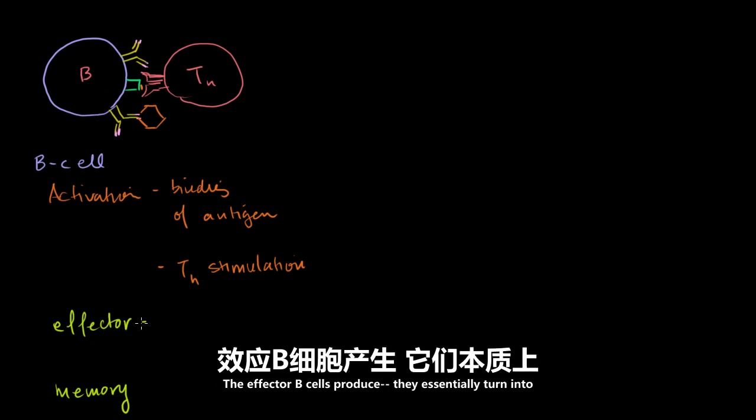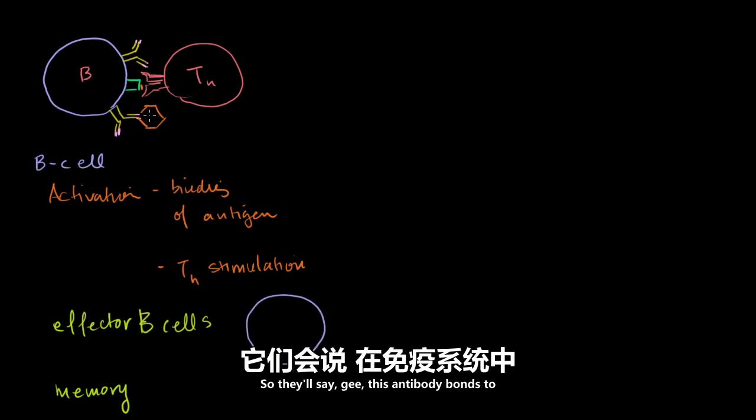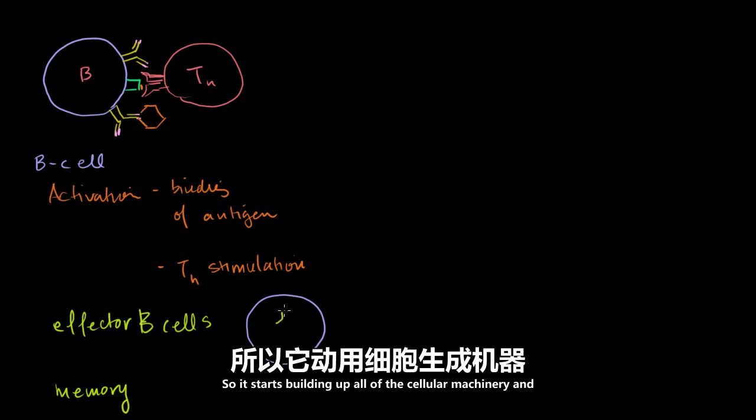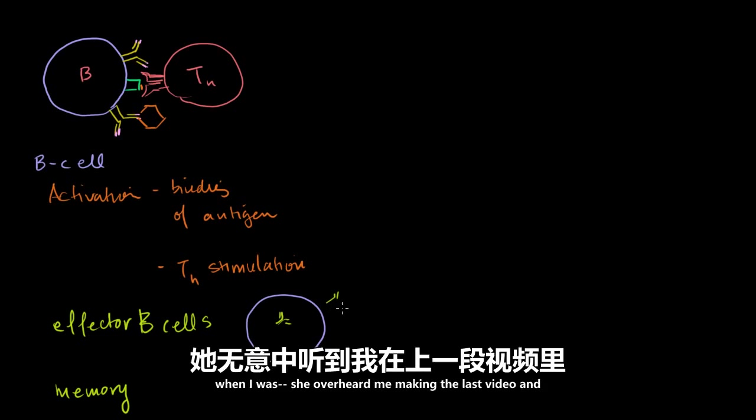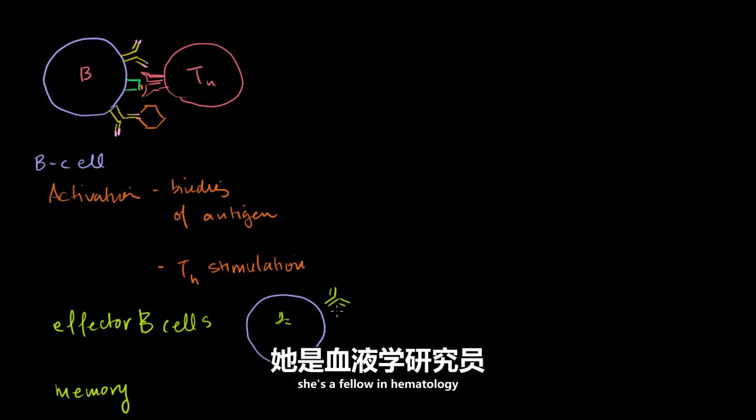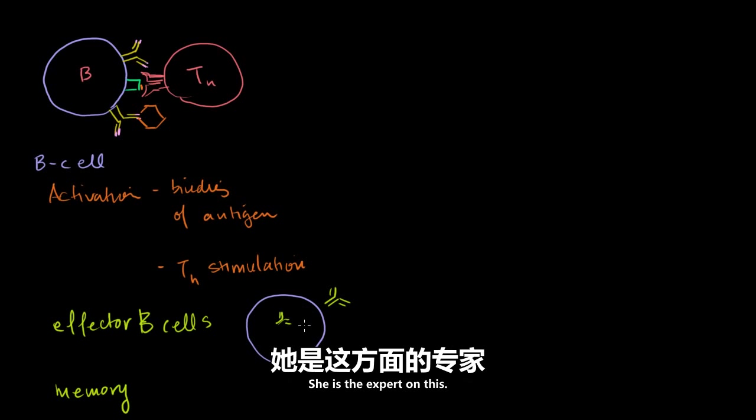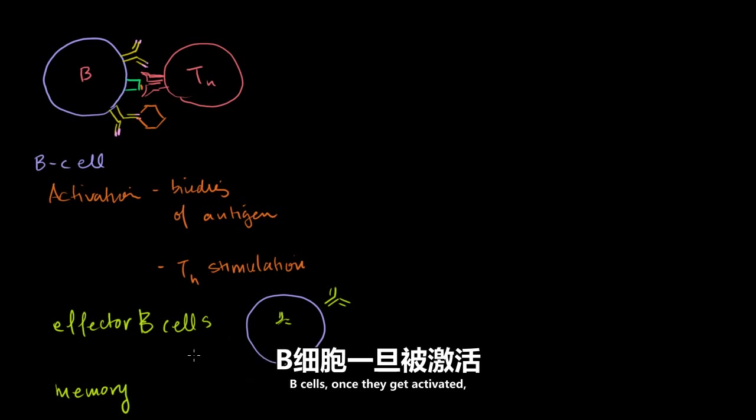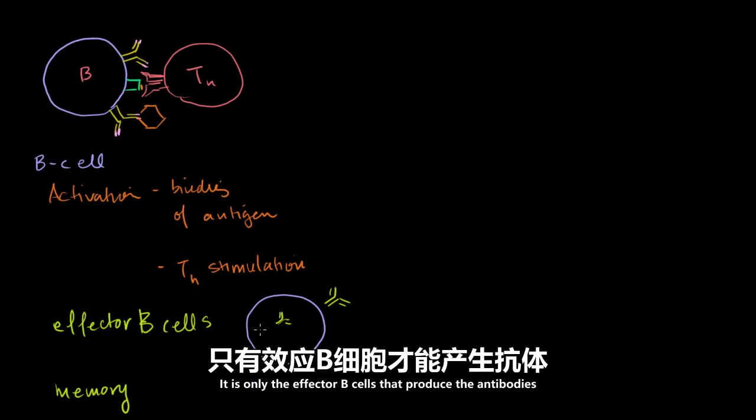The effector B cells produce, they essentially turn into antibody making machines. So they'll say, this antibody bonds to this antigen that we have in the system now. Let me just produce a ton of them. So it starts building up all of the cellular machinery, and it just starts producing antibodies like crazy. And I want to point out one thing that my wife pointed out to me when she overheard me making the last video. And she's a fellow in hematology, and part of a lot of hematology is immunology. So I definitely have to defer to her. She is the expert on this. In the last video, I kind of very hand-wavingly said, oh, you know, B cells, once they get activated, if they're the effector B cells, they produce antibodies.